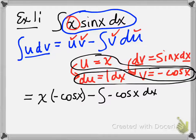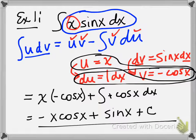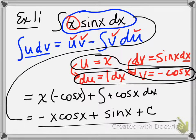So what does this do for us? I have negative x cosine x, and if I bring this negative out it's going to be plus, and I'm integrating cosine x dx, which is something we know how to integrate. Cosine becomes sine, then I put a plus C on the end. So the integral of x sin(x) dx is negative x cos(x) plus sin(x) plus C. We've taken something that was a product and actually been able to integrate it.